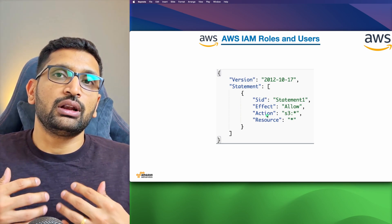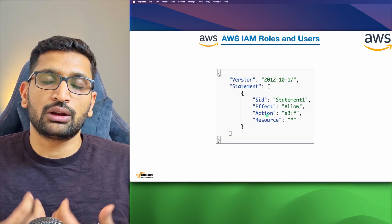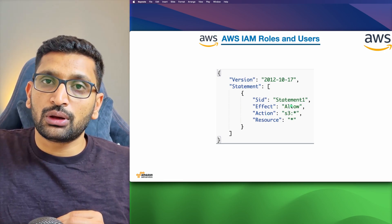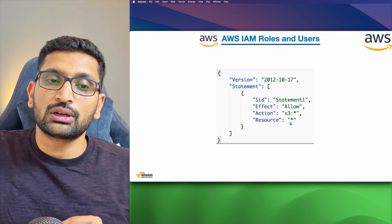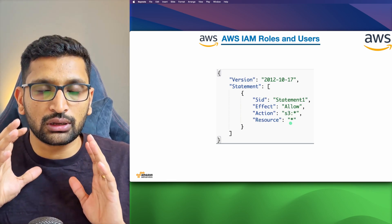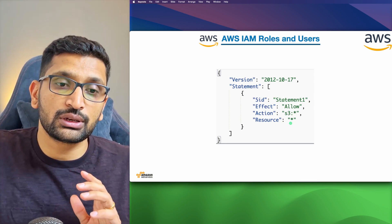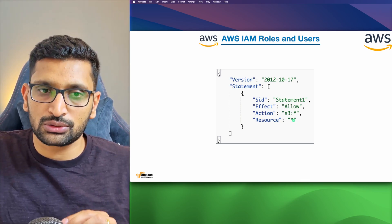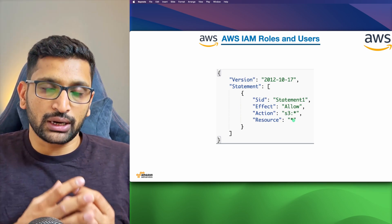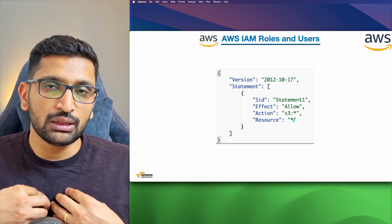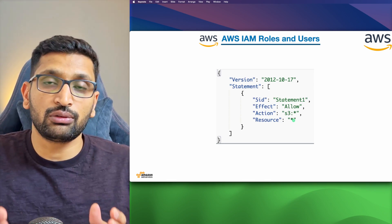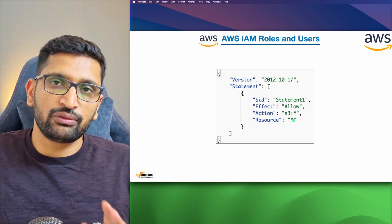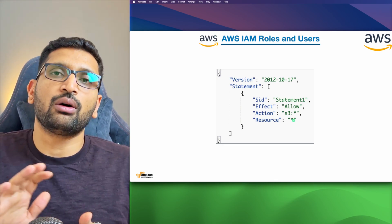Next is action — what kind of action are you allowing or denying for that particular policy? Here I'm allowing S3 access. Then there are resources. If you want to apply this policy to a particular resource, you put that resource's ARN. ARN is just a unique identifier for any resource. So if you've created an S3 bucket and want to assign access to a user, you create this kind of policy. This policy is very basic — we are allowing all S3 buckets and all S3 permissions.